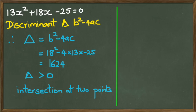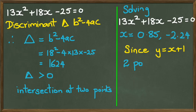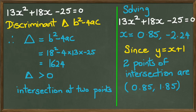Okay, now we're going to try and figure out the two points. So what we need to do is we actually need to solve 13x squared plus 18x minus 25 equals 0. Now, obviously, the quickest way of doing this would be just to put this in the graphics calculator and get the two x values. So x should be 0.85, and the other value of x should be negative 2.24. And since y equals x plus 1, the two points of intersection are going to be 0.85 and 1.85. That's one of the points.